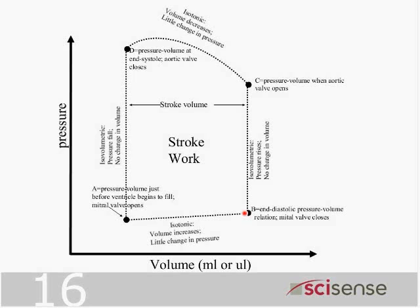When the ventricle begins to contract, the mitral valve closes, and as the ventricle contracts, the pressure goes up in the ventricle, but it doesn't change volume because the aortic valve is closed on one side and the mitral valve is closed on the other. If the ventricle is contracting and no blood can leave, it doesn't change volume but the pressure goes up. There we see the so-called isovolumetric period of contraction.